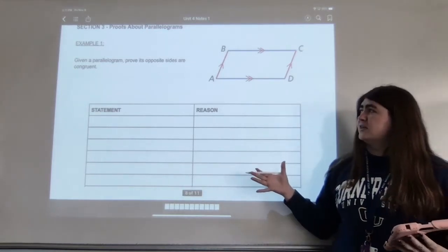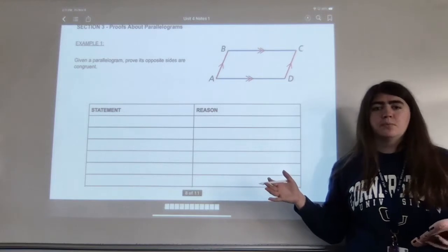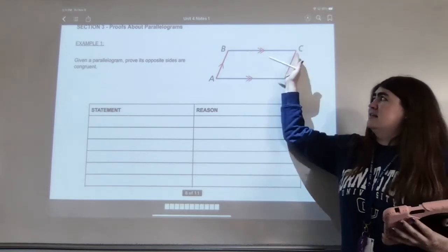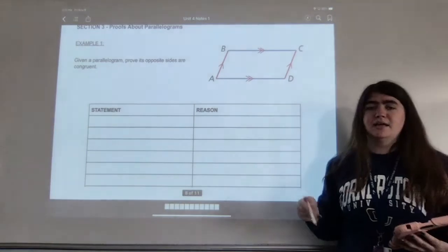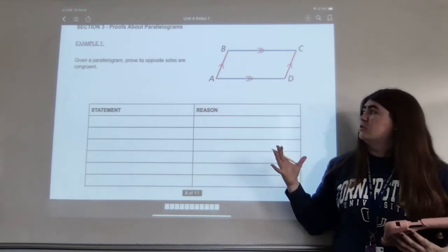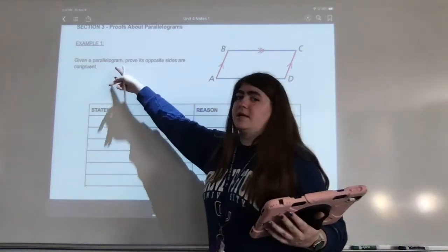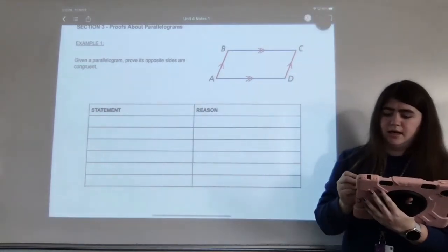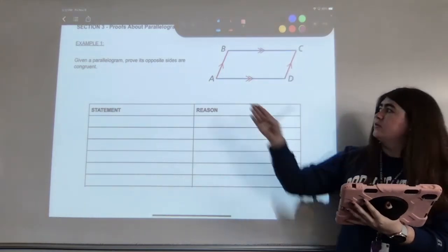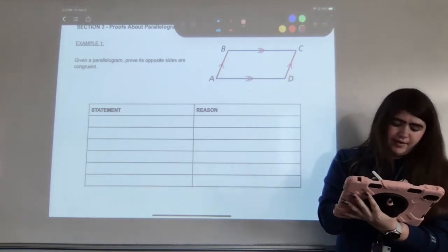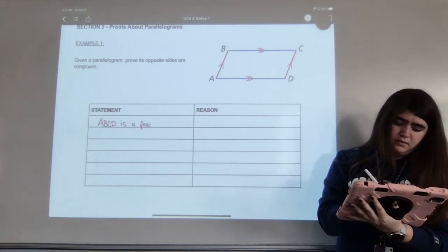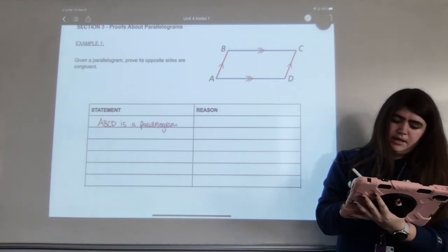We're going to start with this first example that says: given a parallelogram, prove its opposite sides are congruent. So I have AB and BC, and AB and CD, and I need to show that both sets of sides are congruent. I'm going to start with my given statements. So line one: ABCD is a parallelogram, because it is given.